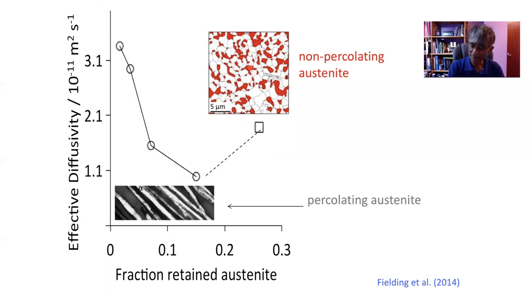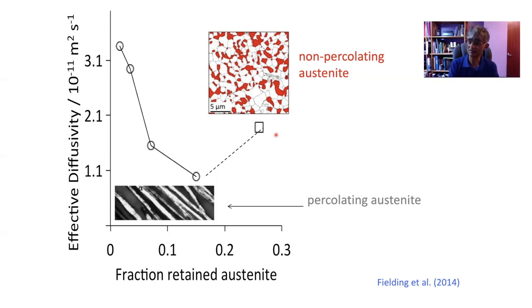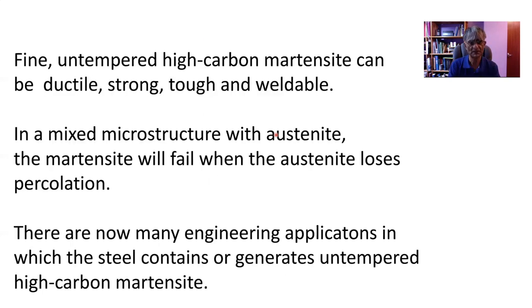You can have a large volume fraction of austenite but not connected in three dimensions — for example in a duplex stainless steel — and then your diffusion coefficient goes up because the hydrogen can flow more rapidly through the continuous ferrite path. In a two-phase structure like this, if the austenite percolates, you're not actually transferring much load onto any martensite until the austenite loses percolation, and then your hard untempered martensite will break.